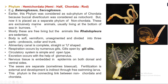In this session we are going to study the remaining phylums and try to complete this chapter. The phylum we are going to study today is Hemichordata. Hemi means half and chordata means rod. The examples in this phylum are Balanoglossus and Saccoglossus. This is Balanoglossus and this is Saccoglossus.